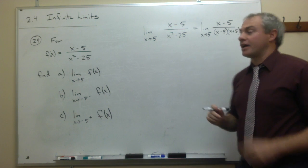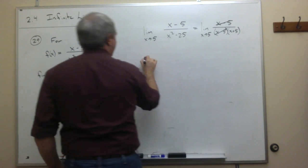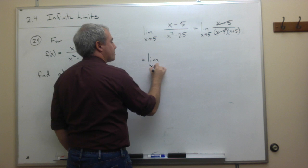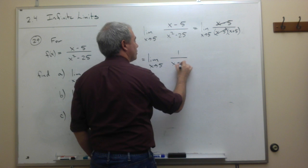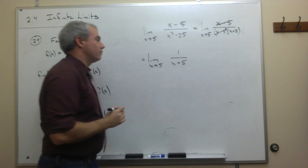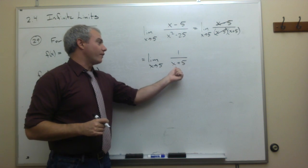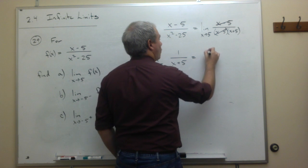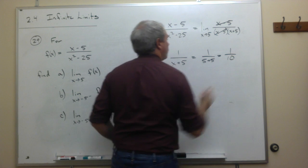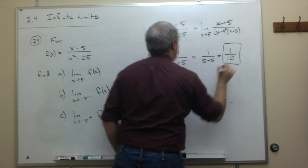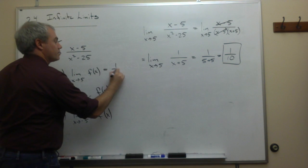The x minus 5 terms cancel, and we're left with the limit as x goes to 5 of 1 over x plus 5. There's no problem with division by zero anymore, so we can plug in 5 for x, giving us 1 over 5 plus 5, which is 1 tenth.